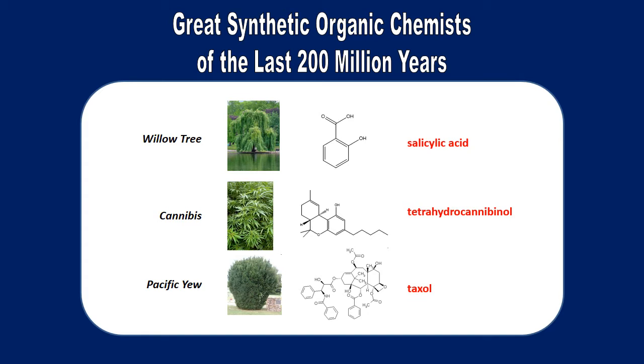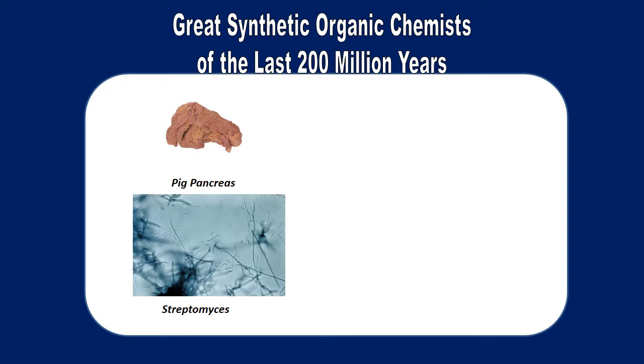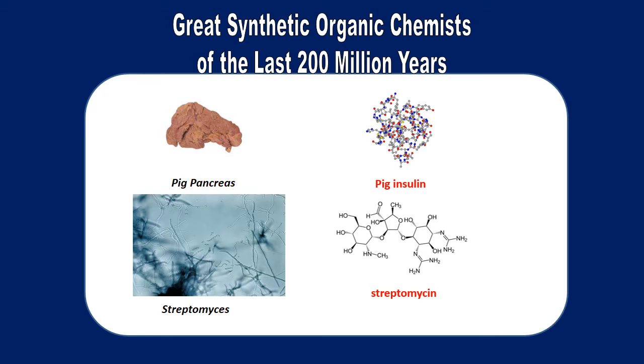All very useful and powerful organic molecules, none of which are synthesized in a lab on a regular basis. But this ability to create useful organic molecules isn't limited to plants. Consider higher order animals like pigs, whose pancreas until just a few decades ago was the source of insulin used to treat human diabetics. Or streptomyces, the source of one of the most powerful antibiotics ever discovered, streptomycin.